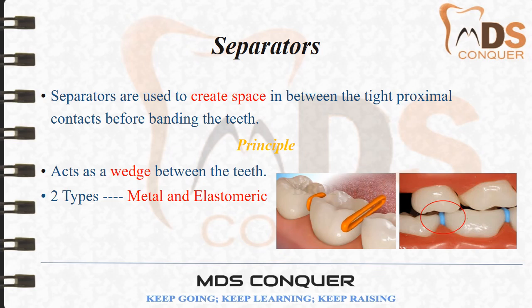Springs can be of many types. Open coil springs are used to create space between tight proximal contacts before banding the teeth. The principle behind the separators is the wedging principle — they are placed like a wedge, stretched and passed through the proximal contact of the teeth, and left in place for 20 to 24 hours to create space.